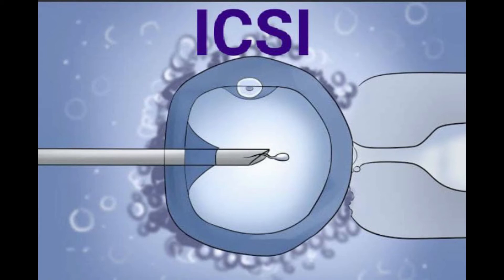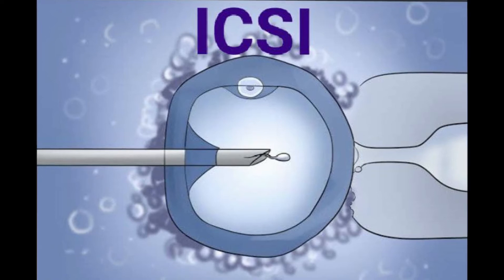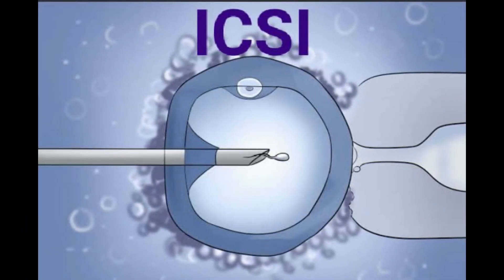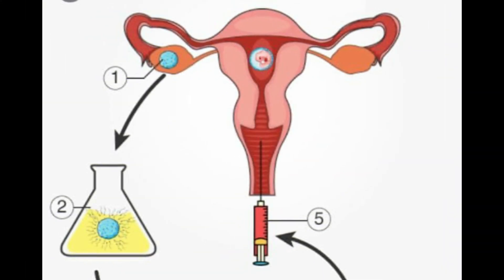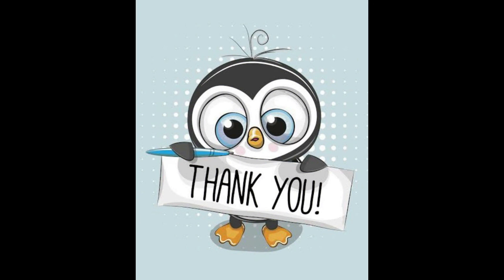The third method is ICSI — intracytoplasmic sperm injection. It is very important. It is carried out by directly injecting the sperm into the ovum to form an embryo in the laboratory. We take the ovum and directly inject the sperm into its cytoplasm. Once it develops into an embryo, we then transfer it into the woman's body. I hope you understand all of this topic very well — thank you so much.